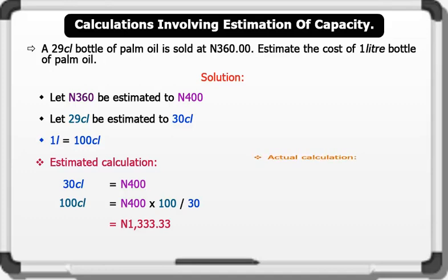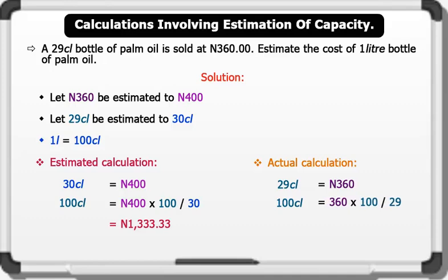Let's see the actual calculation. 29 centiliters equals 360 Naira. 100 centiliters equals 360 Naira times 100 divided by 29. This gives us an actual value of 1,241 Naira 38 kobo. Comparing the two answers, we can say that the estimate is a good guide.